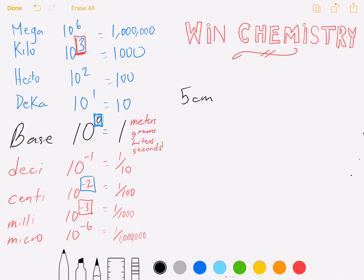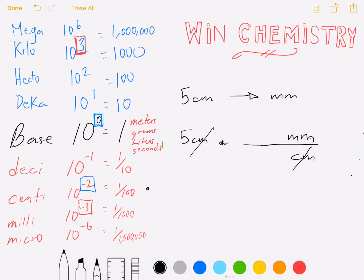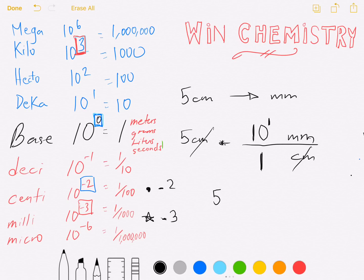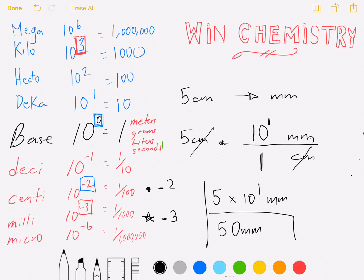Let's go from five centimeters and change this to millimeters. Write down what you have, draw a time sign, draw a line — upper left, bottom right matches. Ask yourself who's higher up: comparing centi and milli. Centi is higher up, so it gets the one; milli is left with the 10. The power difference: you're going from negative two to negative three — a distance of one. So the answer is 5 × 10¹, or 50 millimeters. Either answer is acceptable since they mean the same thing.